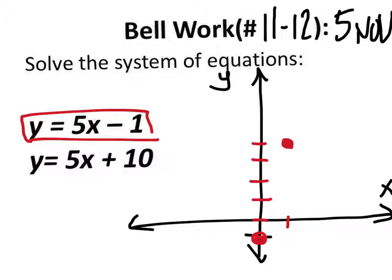Go up another 1, 2, 3, 4, 5 and to the right 1 — right about here. And we got a line.